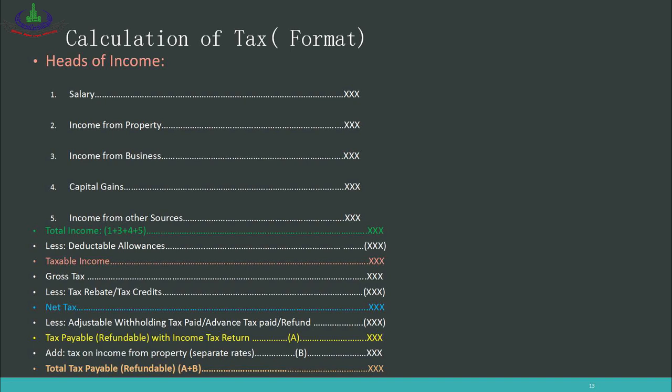This is the actual format for tax calculation that you need to keep in mind whenever solving income tax questions. Chapter 9 contains practice questions on this format. When filing an actual tax return, all this data is entered in the same sequence and the software performs the calculations automatically. In this chapter, study the examples provided, keep the withholding tax procedure in mind, and memorize the few key rates given in the tables in the book. In Unit 7, we will discuss the remaining aspects of the Income Tax Ordinance 2001 in detail.